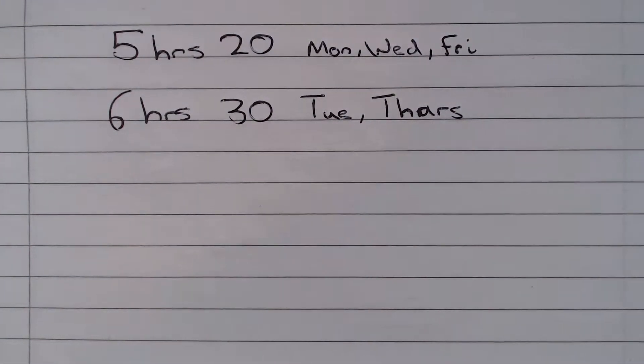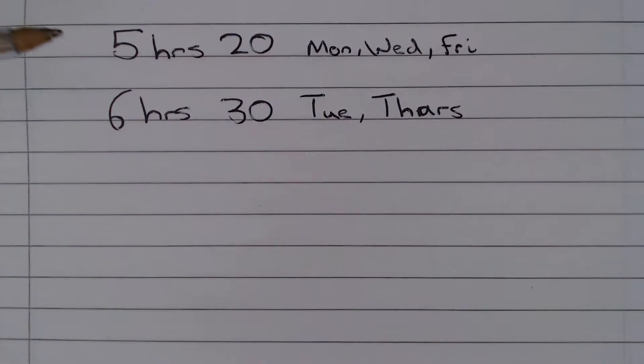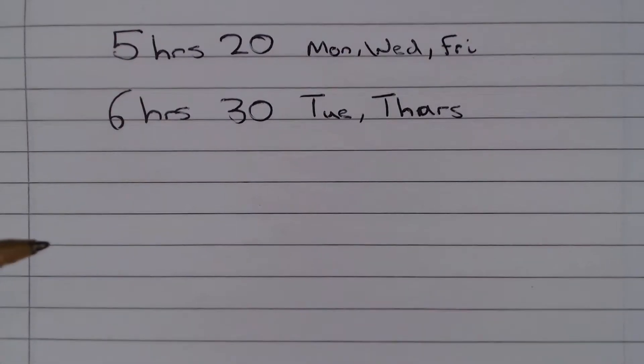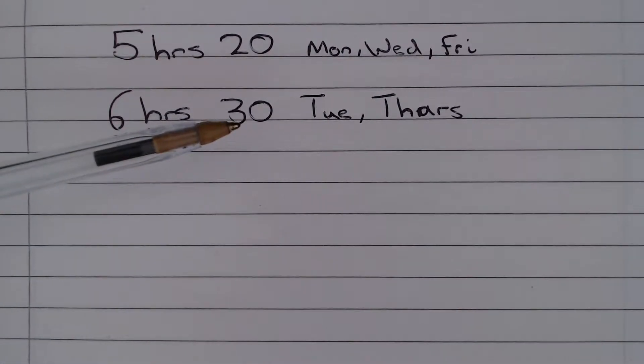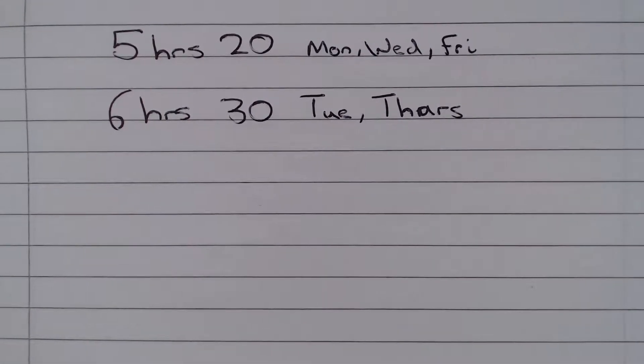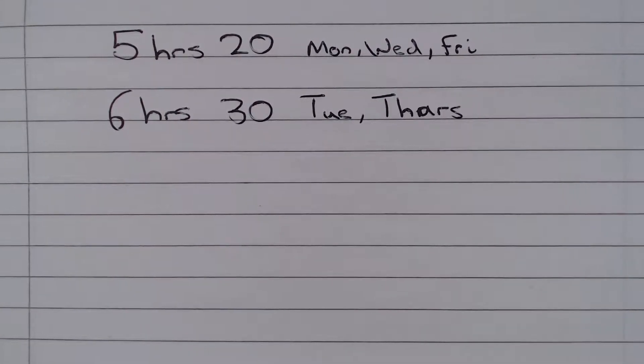In this question we are told that the school library is open for 5 hours 20 minutes on Monday, Wednesday and Friday and 6 hours 30 minutes on Tuesday and Thursday. And the question asks us to find out the total number of hours that the school library is open for in the week.